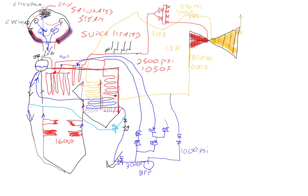So then we exhaust out of the final stage of the IP and we run across and now we're going to the low pressure turbine.